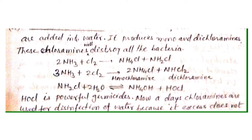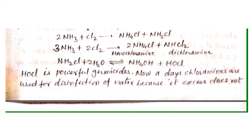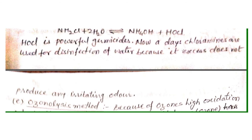The next is the chloramine process. In this method, ammonia and chlorine are added into water, producing monochloramine and dichloramine. When ammonia reacts with one molecule of chlorine, it makes monochloramine; when it reacts with two molecules of chlorine, it forms dichloramine. These mono- and dichloramines react with water to produce HOCl, which is a strong and powerful germicide that destroys all the bacteria and microorganisms.